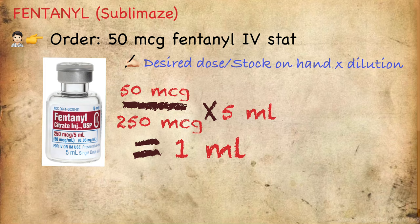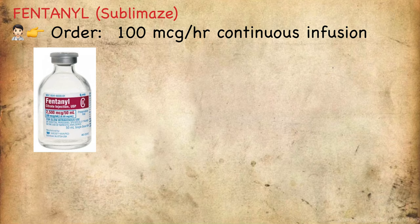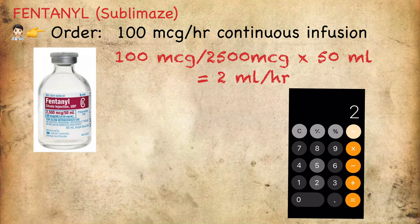Another example: the order is to start a 100-microgram per hour IV infusion of fentanyl. The available stock provided by pharmacy is 2500 micrograms in 50 mL normal saline in a syringe. Using the same formula: 100 mcg ÷ 2500 mcg × 50 mL = 2 mL per hour.